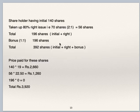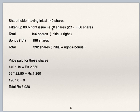One more question was asked. One shareholder initially had 140 shares. He has taken up 80% of the right issue. The right issue ratio offered is 2:1, so for 140 shares, half of that — 70 right shares — were offered to him. But he has taken 80% of 70, which is 56 shares. So the total number of shares after the rights issue which he was holding is 140 plus 56 = 196 shares.